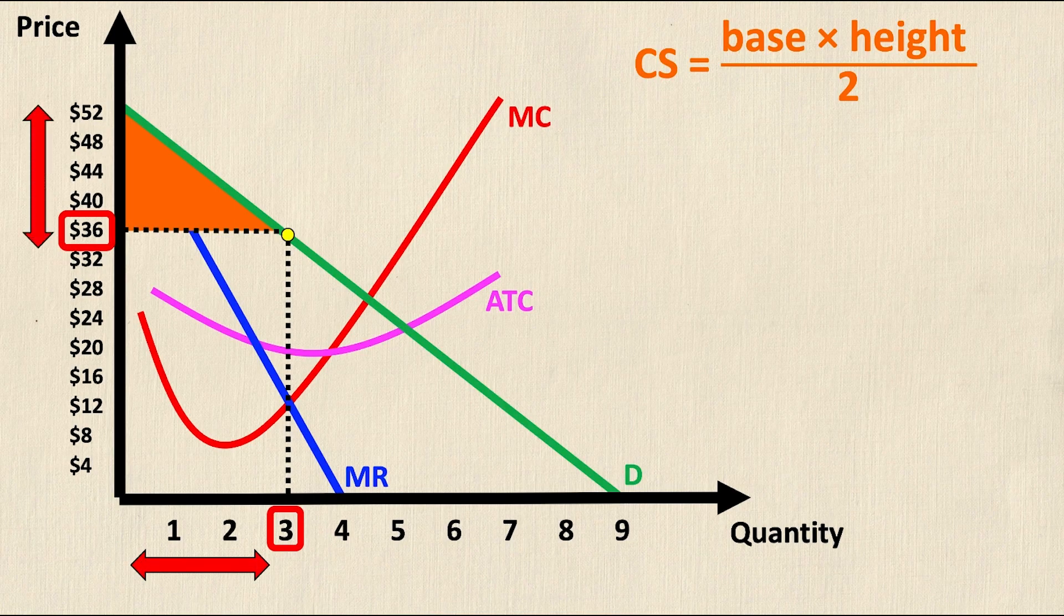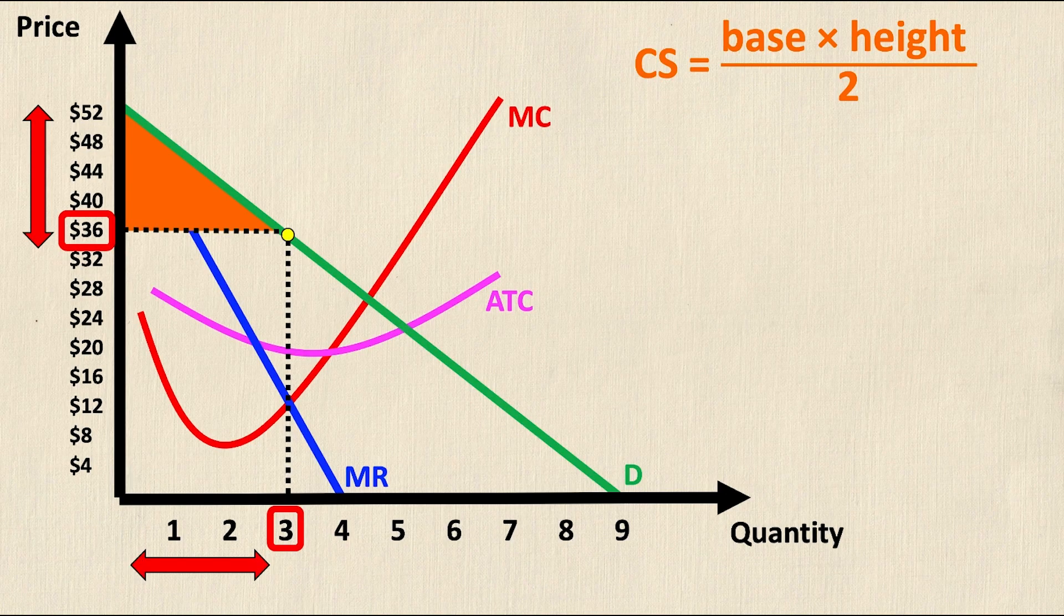Well the height's a little bit trickier. It's not 36 but it's actually the difference between the p intercept of the demand curve which in this case is $52 and $36.